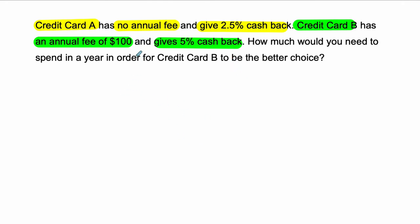So we have credit card A. Let's change colors here. Credit card A. There's no annual fee, so essentially all the profit you're going to get is 0.025 times the money you spend.